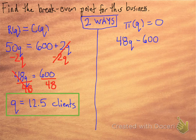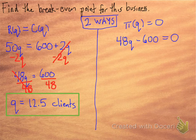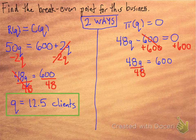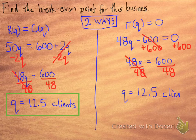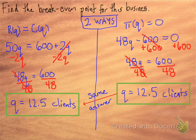Now let's do it the other way. Let's set the profit equal to zero and solve for Q. A little bit of algebra action happening here. And boom—Q is 12.5 clients. Same answer.